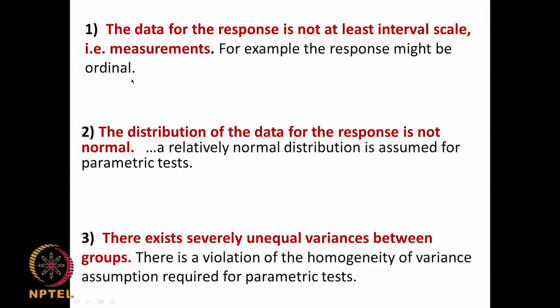Welcome to the course on Biostatistics and Design of Experiments. We will continue on the topic of non-parametric tests. Generally, non-parametric tests are used when the data is ordinal — that means we do not have a continuous x-axis, for example changes in a parameter as a function of time. They are also used when the distribution does not follow a normal, chi-square, F, or t distribution, or when the variances are unequal.